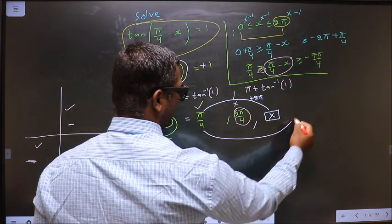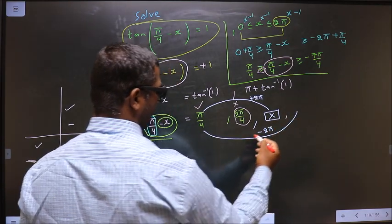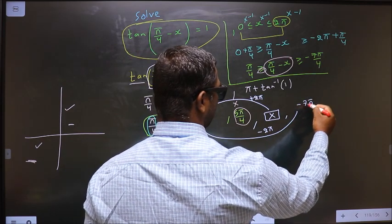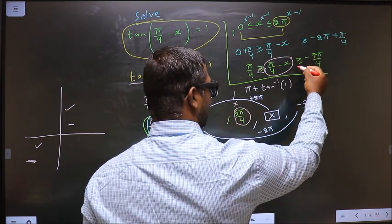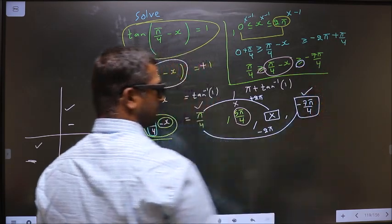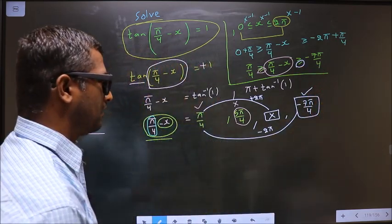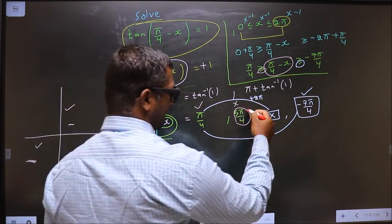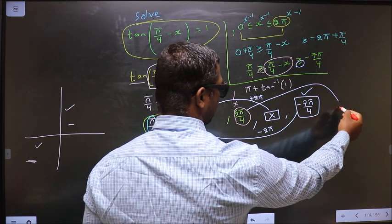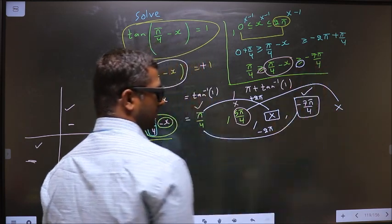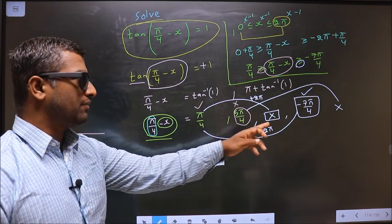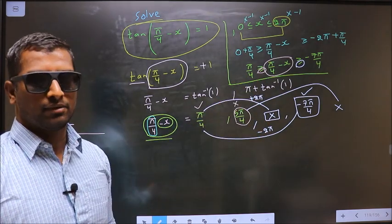What if we subtract 2π from 5π/4? We get 5π/4 - 2π = -7π/4. Since we have 'equal to' at the boundary, this value is accepted. Even if we add or subtract 2π to -7π/4, those results will not lie in the interval. So finally we have two values lying in the interval: π/4 and -7π/4.